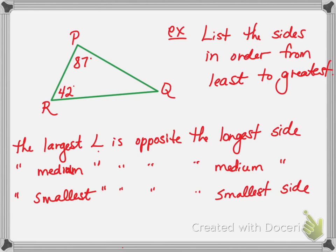So if they want us to list the sides in order from least to greatest—smallest, then medium, then biggest—all we need to do is look at the angles and figure out what the smallest angle is, then the medium angle, and then the biggest angle.